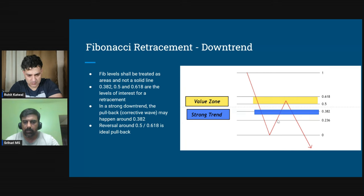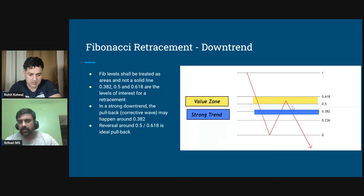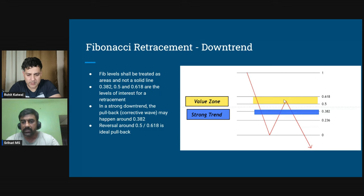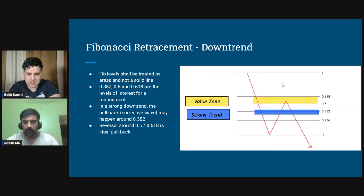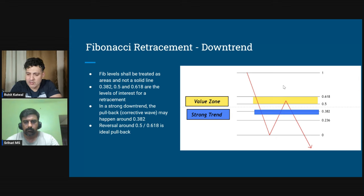The same picture applies on the downtrend: we have an impulse wave going down and a corrective wave taking prices up. A normal corrective wave in a downtrend will take prices to the 0.5 to 0.618 zone — this is an ideal place to take your next short position. The next impulse wave's projection is seen using Fibonacci extensions. If bearish momentum is strong, reversal can come from 0.382 as well. The 0.618 is called the golden ratio.